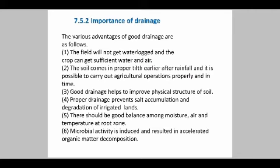Let's see the various advantages of good drainage. The field will not get water logged and the crop can get sufficient water and air. The soil comes into proper tilth earlier after rainfall and it is possible to carry out agricultural operations at the proper time. Good drainage helps to improve the physical structure of the soil, and proper drainage prevents salt accumulation and degradation of irrigated lands. There should be a good balance among moisture, air and temperature at the root zone, and microbial activity is induced, resulting in accelerated organic matter decomposition.